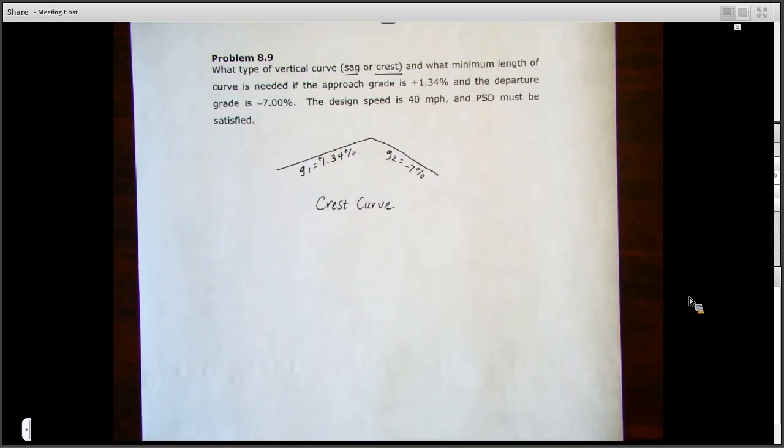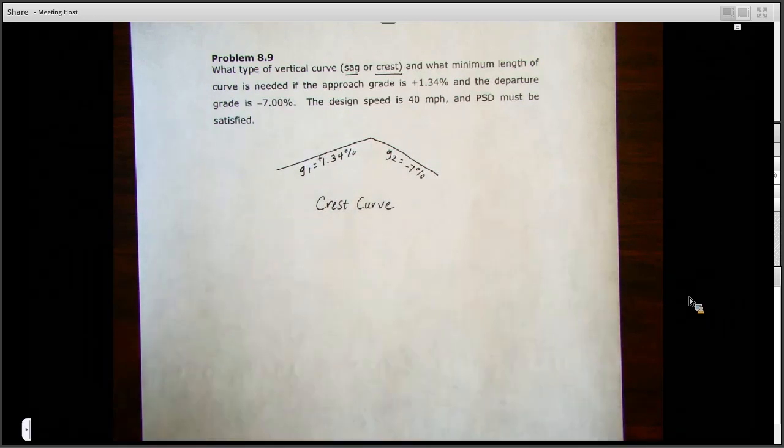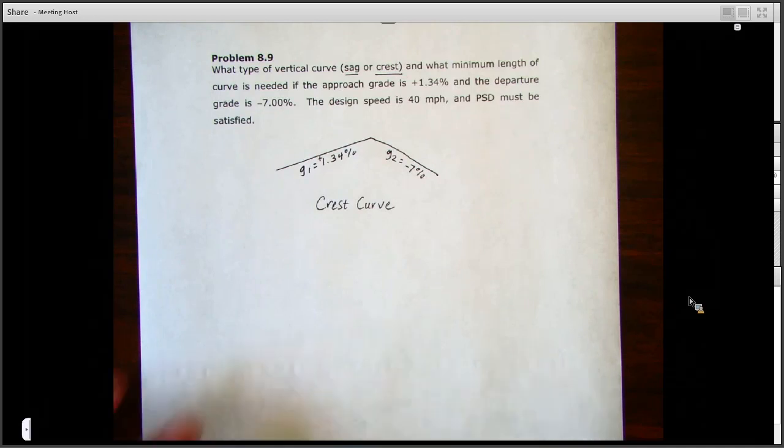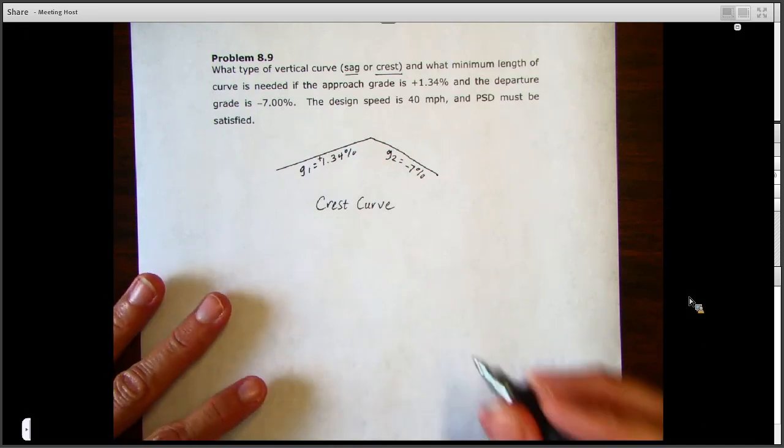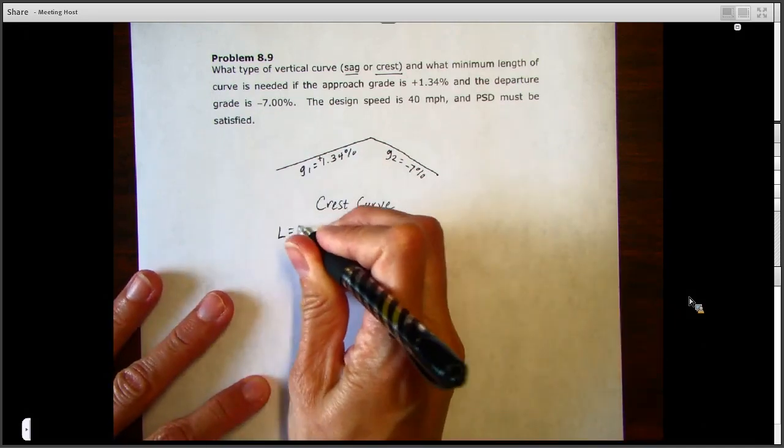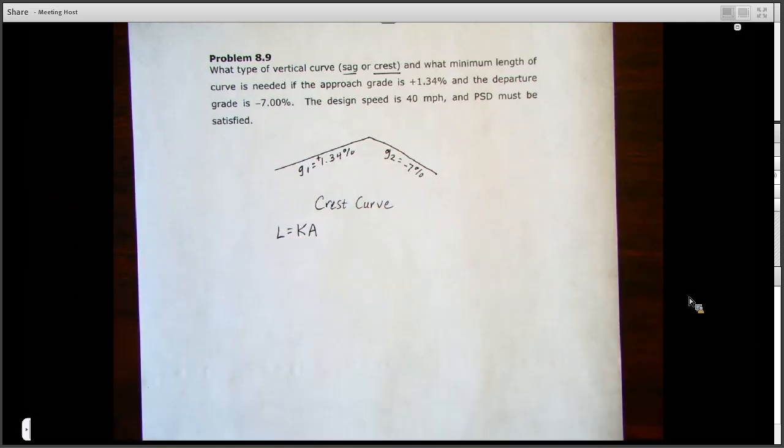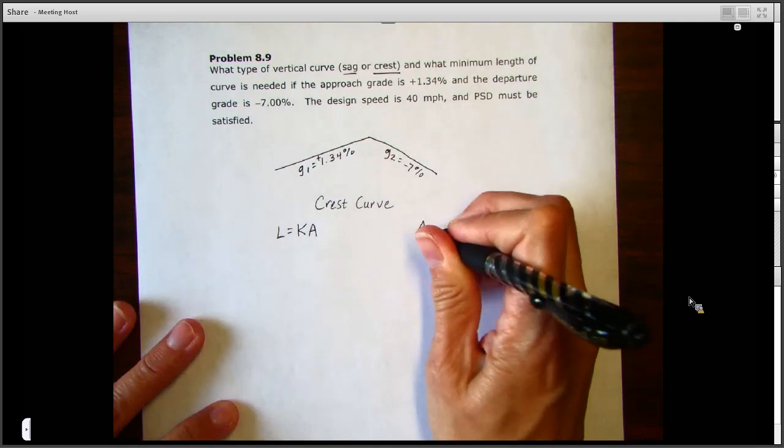With an entrance grade going uphill and an exit grade going downhill, so now the next question is to figure out what length of curve we need for that. We're going to use our length of curve formula that L equals K times A.